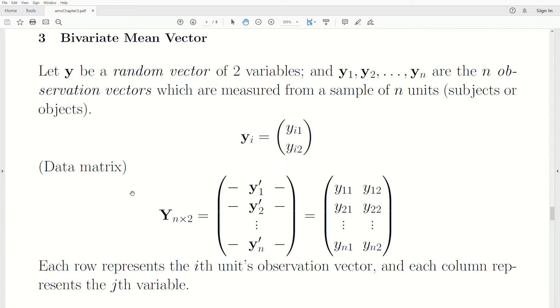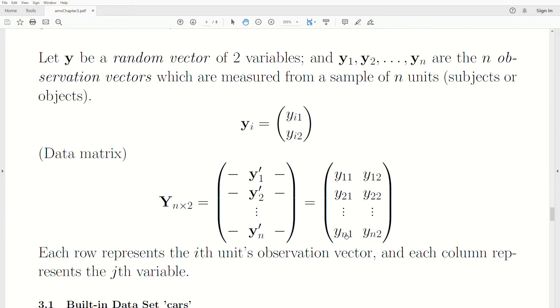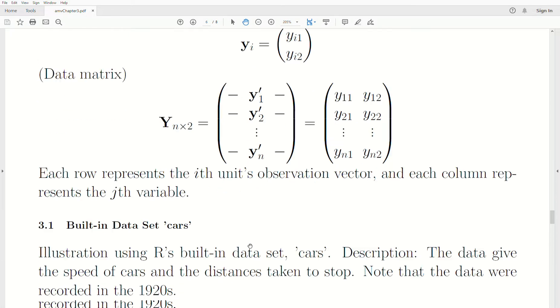The data matrix in a bivariate sample is an n by two matrix. There's n observations and two variables. Y1 transpose, that's the first observation with two components, second observation, two components. Notice that the indices are the same on each row because each row represents a person or subject, and each column represents a variable.